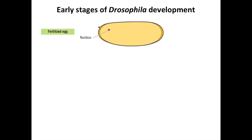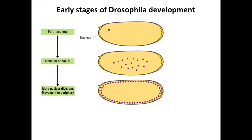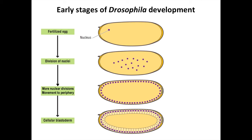Upon fertilization, the nucleus in the Drosophila egg undergoes a series of very rapid divisions — in fact, some of the most rapid nucleomitotic divisions known in any organism, doubling the number of nuclei about every nine minutes. After the nuclear divisions have produced several hundred nuclei, these move to the periphery of the embryo, where they undergo additional rounds of division, forming several thousands of nuclei around the periphery. Although the nuclei divide very rapidly, there are no corresponding cell divisions during this early stage. It is only after the thirteenth round of nuclear division that the plasma membrane surrounds the nuclei to form individual cells around a central core of yolk.